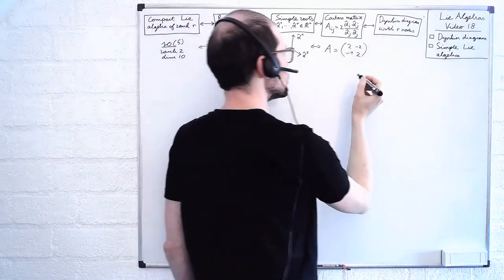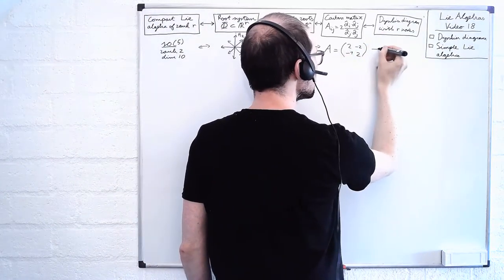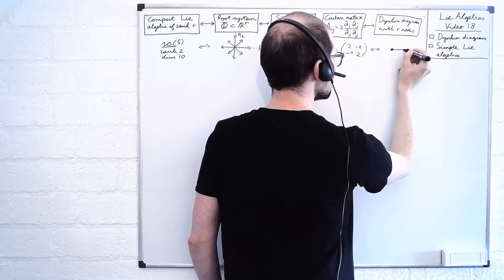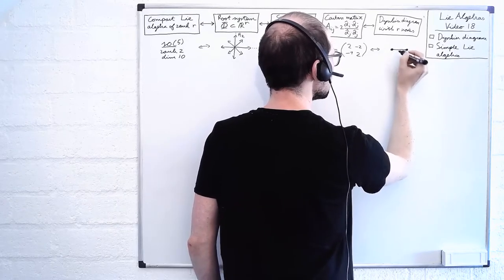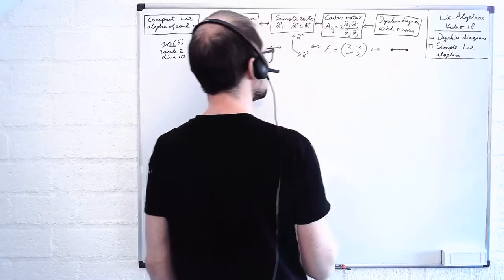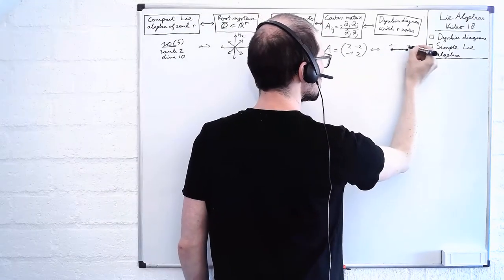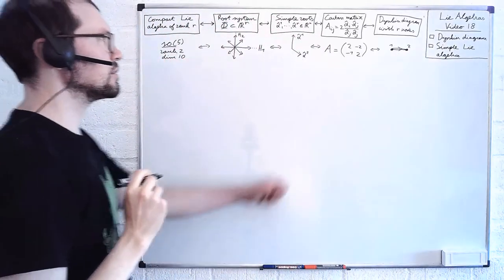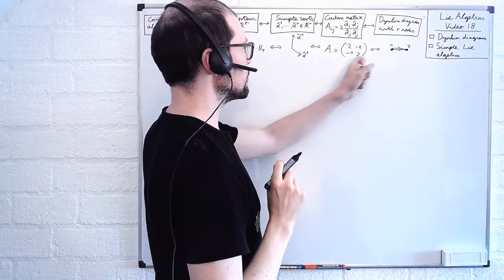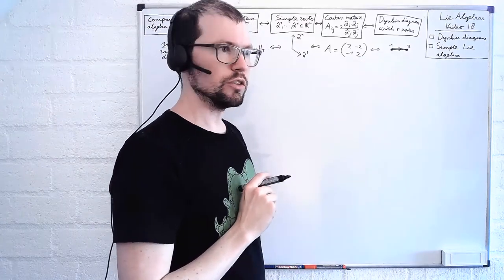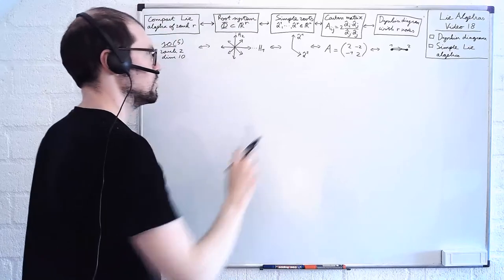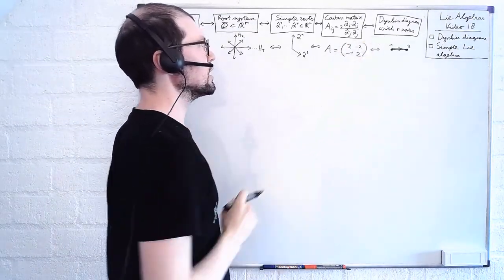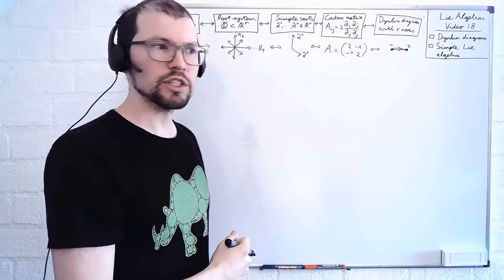So the Dynkin diagram corresponding to this Cartan matrix will be a graph on two nodes — a node for each of the roots — and the edge is going to encode the inner product between these two roots. So let me explain in a bit of detail how we associate the Dynkin diagram to a root system.